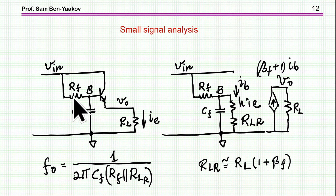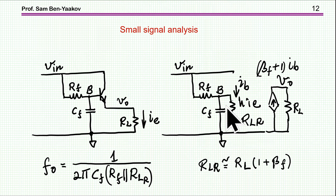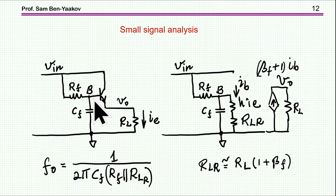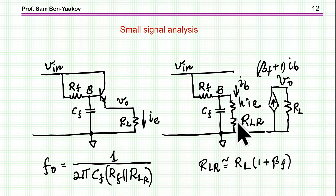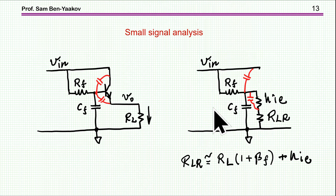What about the high-frequency response and ripple attenuation? We do have a low-pass filter, but we must consider the impedance looking into the base. This impedance is HIE plus the reflected resistance, which is the resistance times (1 + beta_AF). The pole will depend on the capacitance and these two resistances in parallel — this is many times larger than RF, so the breakpoint is approximately determined by RF and CF.